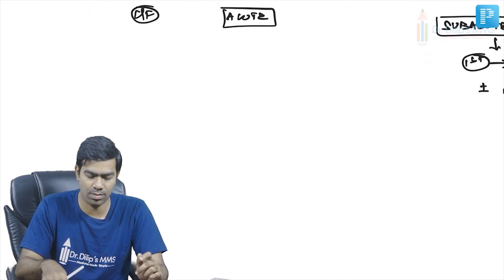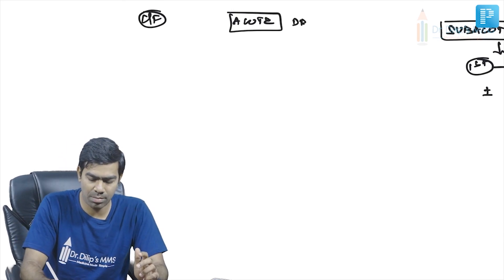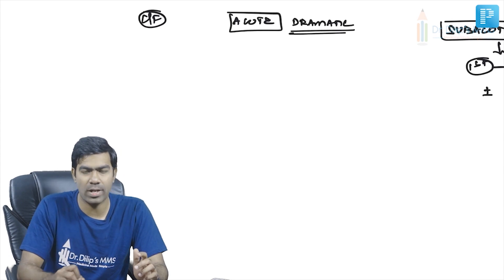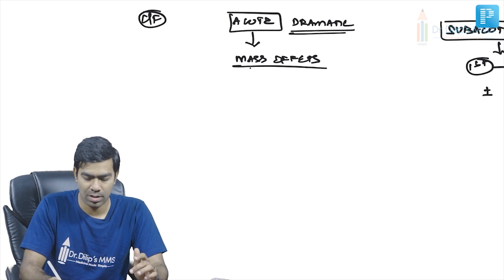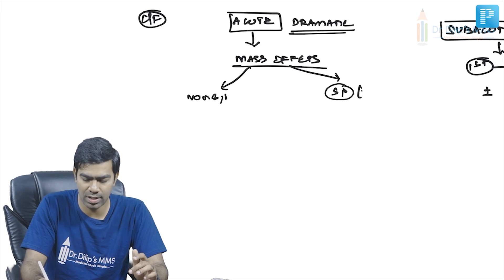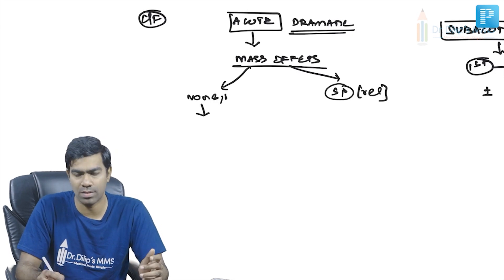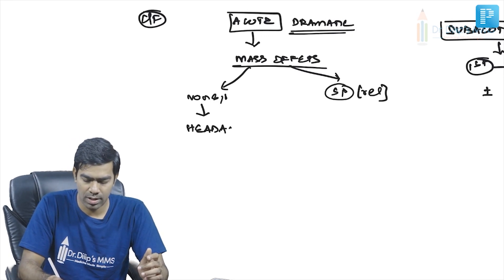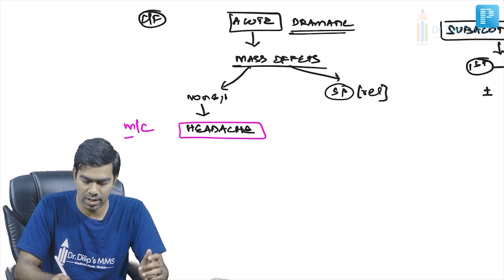The first sign in Sheehan syndrome is almost always lactation failure. Apoplexy, by contrast, presents dramatically and is a neurosurgical emergency. The pituitary mass produces non-specific mass effects such as headache and specific effects related to pituitary anatomy.